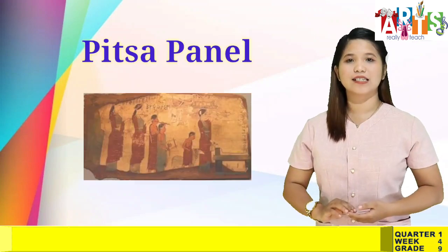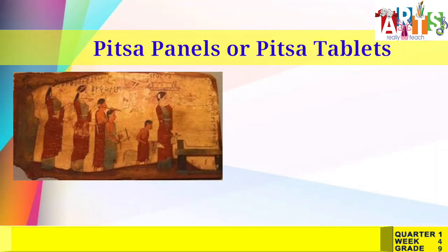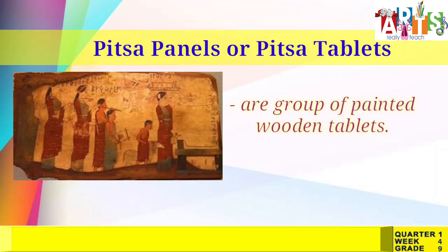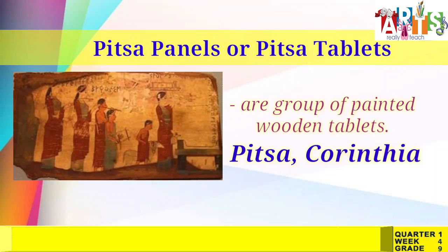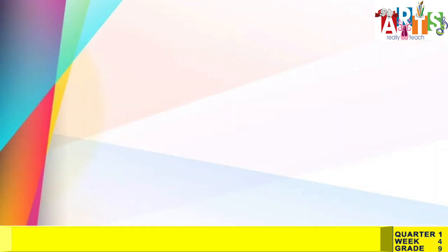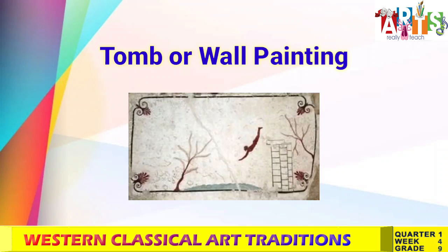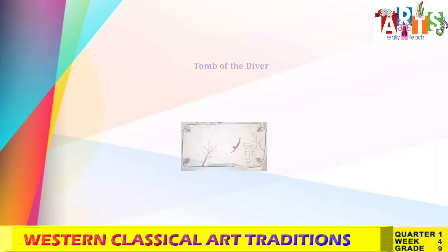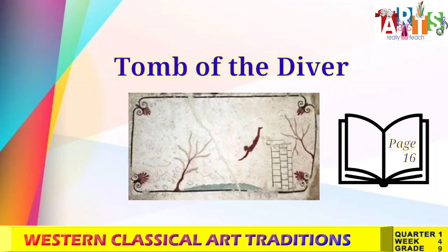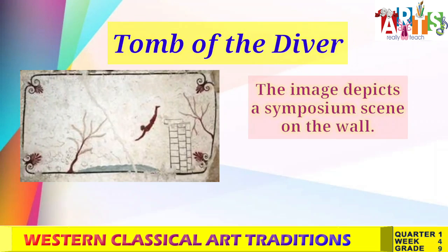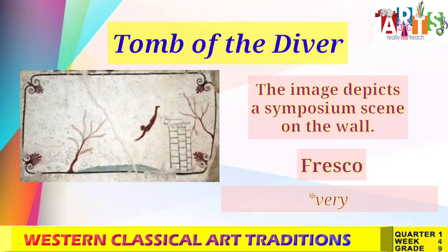The earliest panel painting is the Pitsa panel. The Pitsa panels or Pitsa tablets are a group of painted wooden tablets found near Pitsa, Corinthia. And lastly, the tomb or wall painting. Tomb or wall painting was very popular during the classical period. One example is the Tomb of the Diver on page 16. The image depicts a symposium scene on the wall. It was painted using fresco in water-based or wax materials, and because it uses water-based materials, very few samples survive.